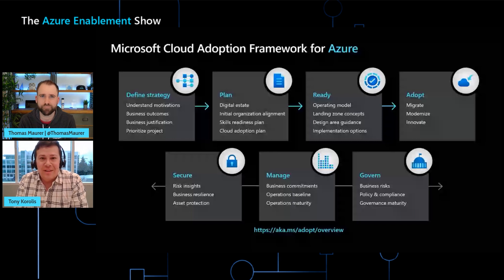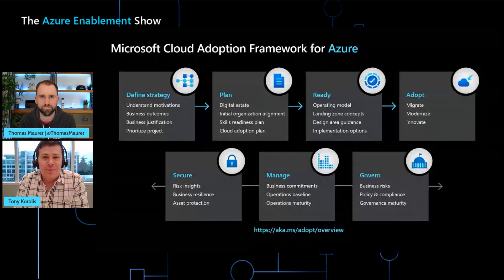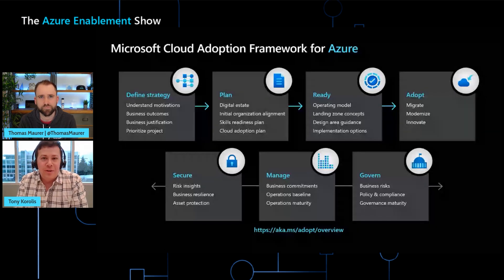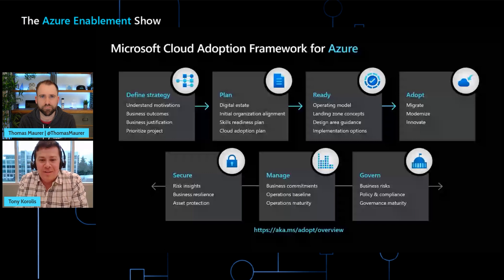Adopt is about how you're going to orchestrate the migration or modernization — things like automation to make things go even faster as you get through the latter stages. And then the stripe across the bottom — secure, manage, and govern — these are the steps you should think about even though they're post-migration: how are you going to set up a good backup and disaster recovery strategy, how are you going to ensure good governance through things like policies and blueprints. These are all called out in the tool that we'll look at in a few minutes, so we're really thinking holistically about readiness.